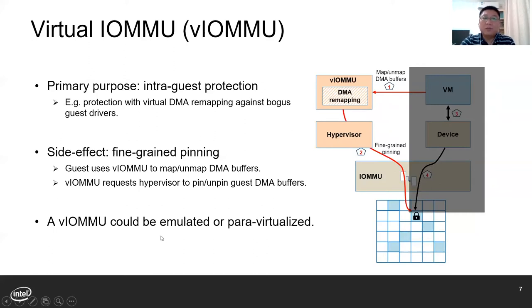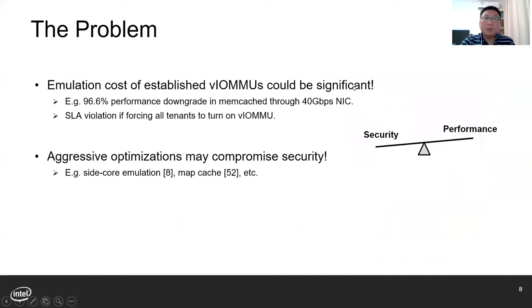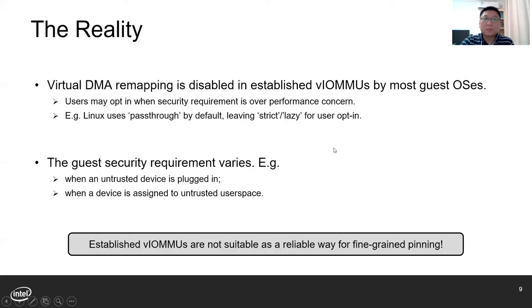Also, like other virtual devices, VIOMMU can be an emulated one or a paravirtualized one. However, VIOMMU has its problem. The emulation cost of current VIOMMU could be significant. For example, we observed more than 96% performance downgrade in map cache workloads in VMs with VIOMMU. There are some aggressive optimizations proposed; however, these proposals offer limited performance improvement at the cost of compromised security and extra hardware CPU consumption. As a result, virtual DMA remapping is normally disabled in current VIOMMU by most guest OSes.